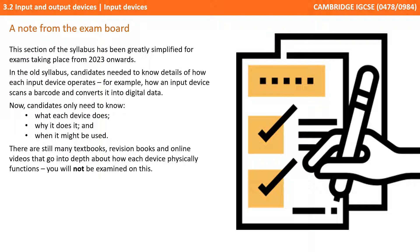In the old syllabus, candidates needed to know details of how each input device operates — for example, how a scanner reads a barcode and the process involved in converting that into digital data. However, now you only need to know what each device does, why it does it, and when it might be used.